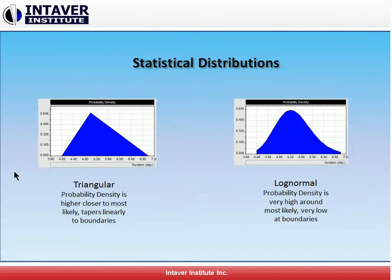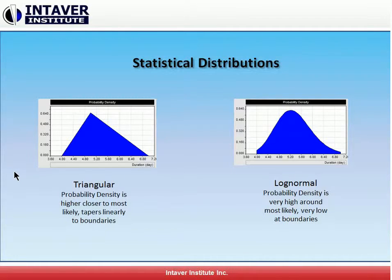Here are two common statistical distributions used when modeling duration uncertainty: Triangular and Beta. Of the two, triangular is a simpler distribution to model. All that it takes is a low, high, and most likely estimate. Some of the other distributions require other parameters and can take a lot of time to model.